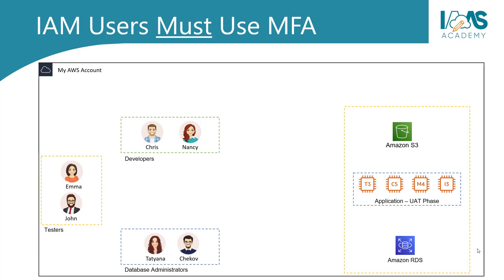In our example, we have several groups that need access to various services on AWS. We've got Chris and Nancy, our developers, who require access to Amazon S3. We have our testers, Emma and John, who need access to EC2 to test our new application across various instance types. And then we have Tatiana and Chekhov, our database gurus, who need access to Amazon RDS to launch and configure databases.